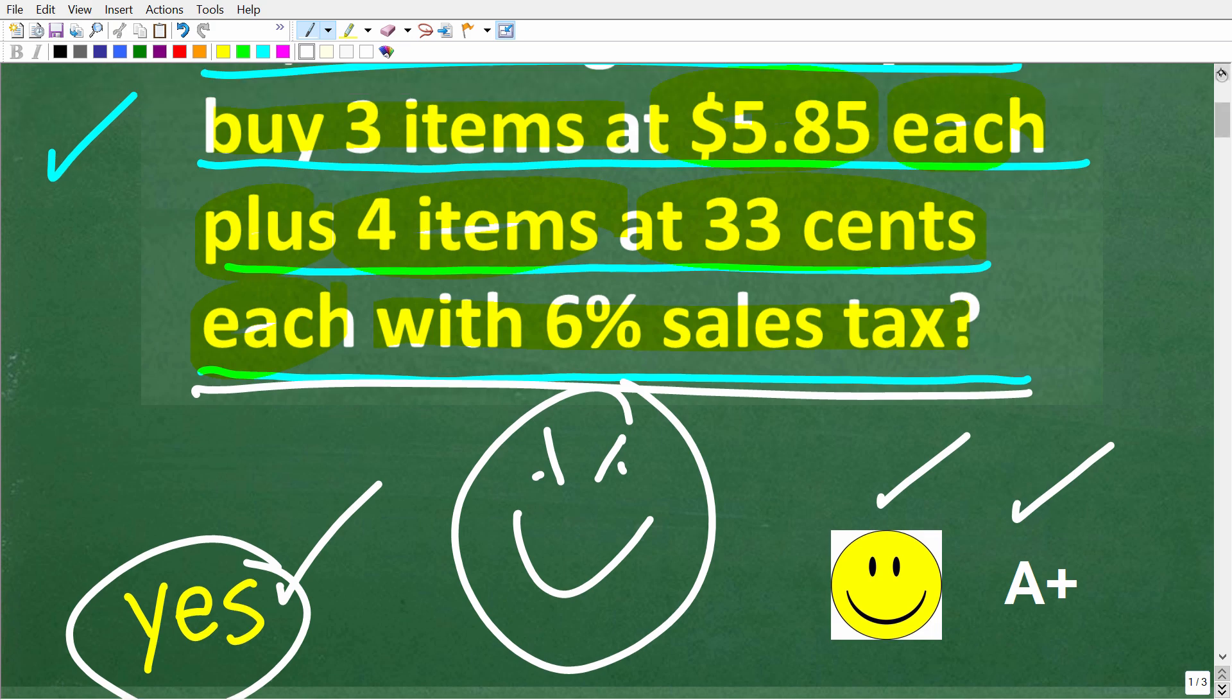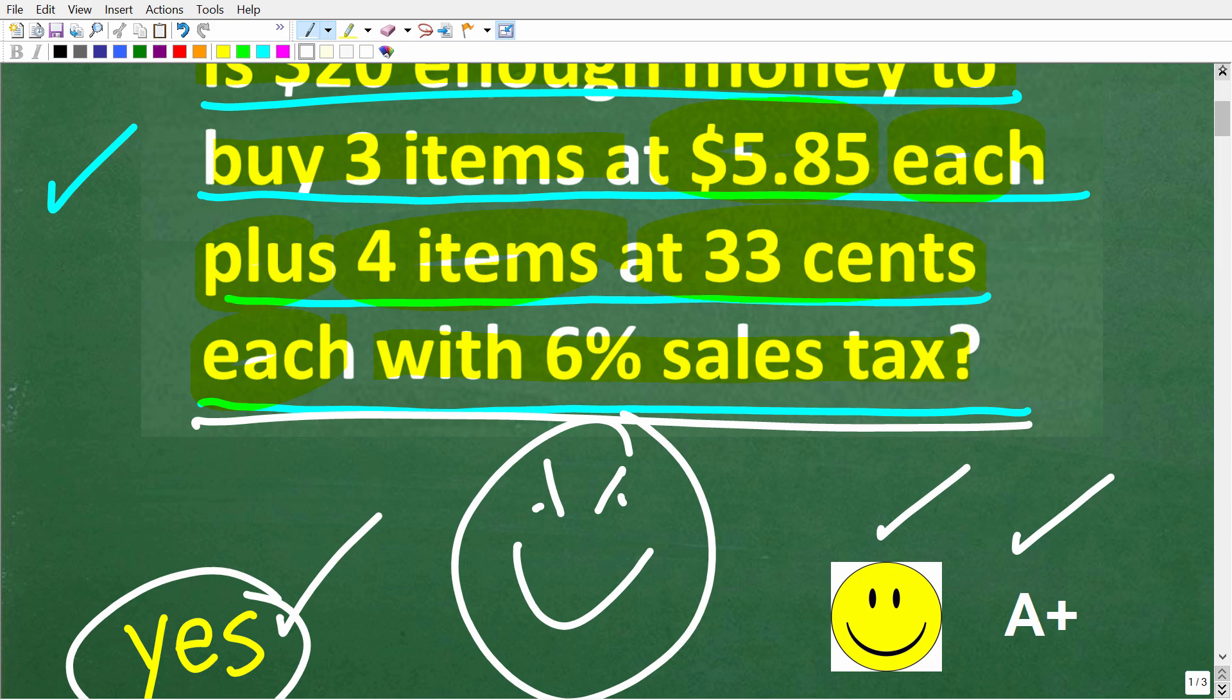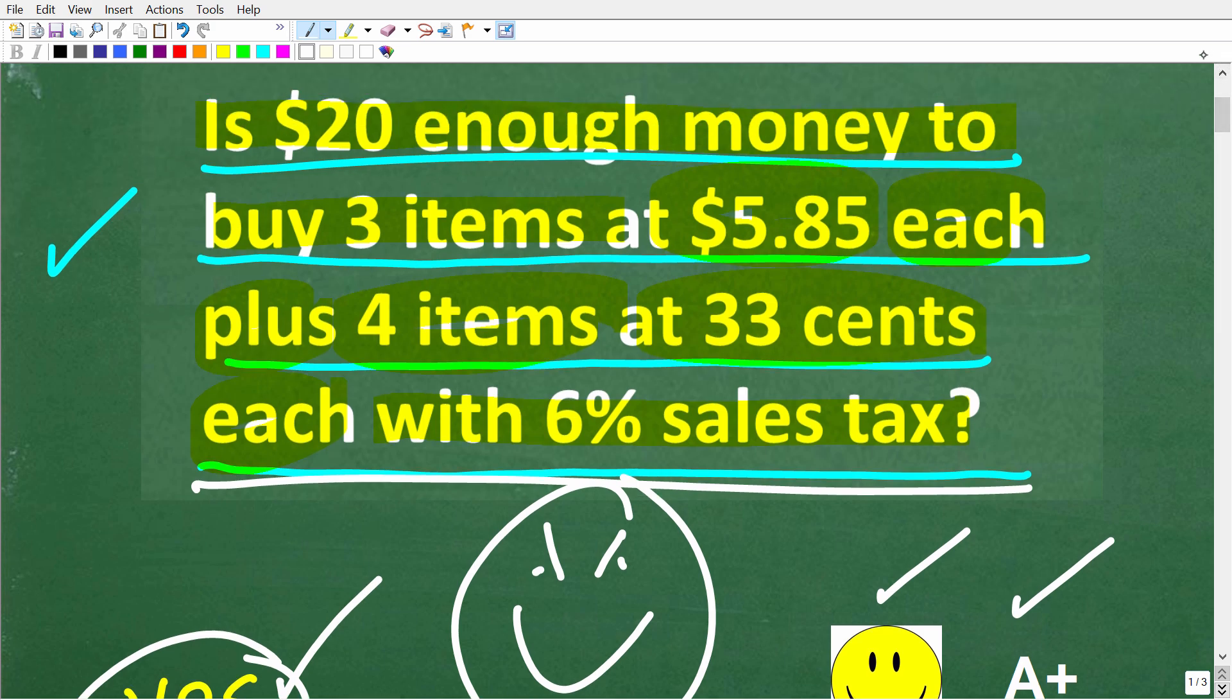But what we want to do here is not take a wild guess, right? We want to do the math and to make sure that, indeed, $20 is enough money to buy all these things and to pay for this sales tax. Okay, so let's go ahead and get into how to do this problem.